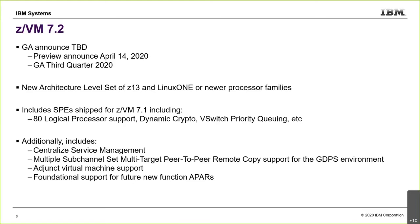Both of those make sense as items set into a release rather than the service stream. Another item is adjunct virtual machine support, which we actually shipped a while ago but didn't fully document. This is more of interest to ISVs or those developing systems in a ZVM environment — it allows a virtual machine to run connected to your existing VM for debug capability. In 7.2 we'll be properly documenting that. Additionally, there will be some foundational support in 7.2 for things coming in the future.